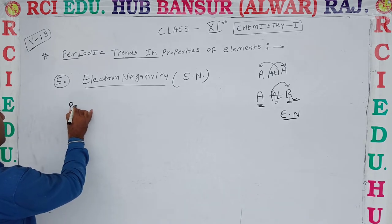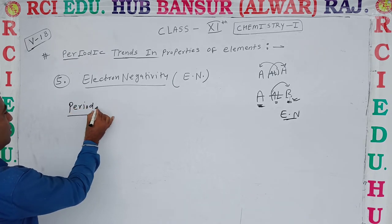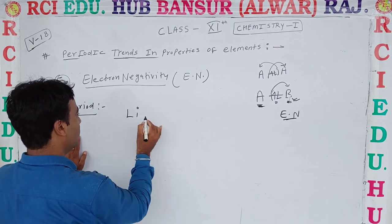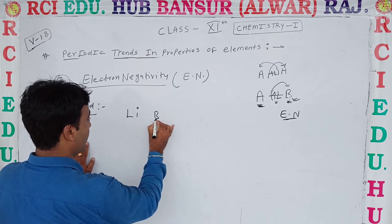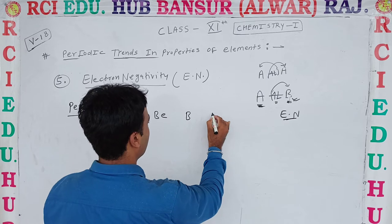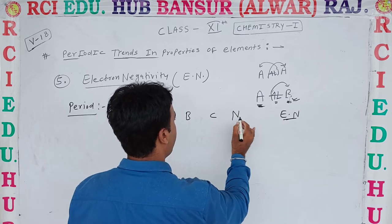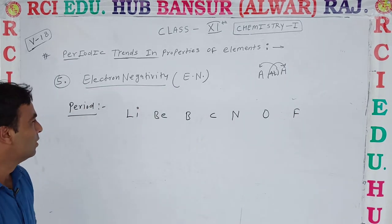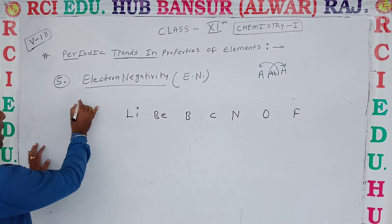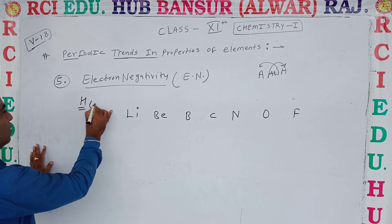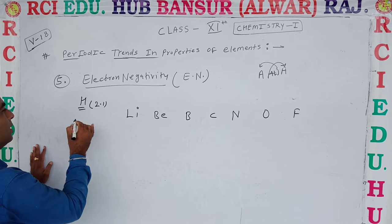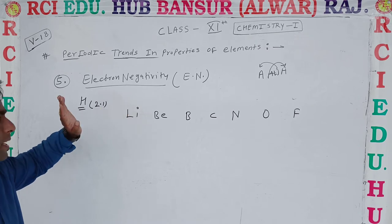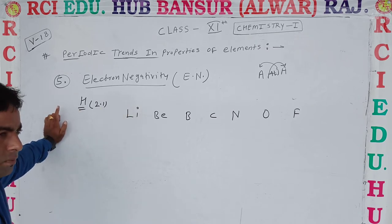First of all, let's look at the period. If we take the example of elements in a period: Lithium, Beryllium, Boron, Carbon, Nitrogen, Oxygen, Fluorine. Hydrogen has an electronegativity of 2.1. Electronegativity is a unitless quantity — there is no unit for electronegativity.